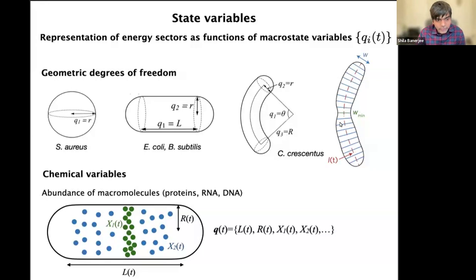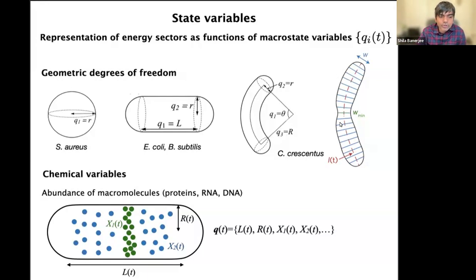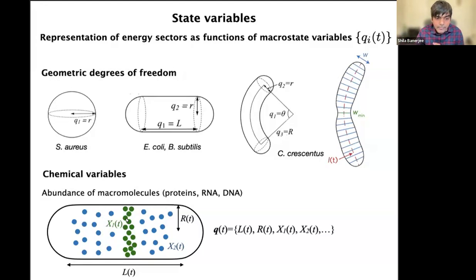In addition to geometric degrees of freedom, the cell is a bag of different macromolecules, so you can also introduce chemical variables — the abundance of macromolecules. For example, I'm modeling two macromolecules: the blue ones are ribosomes and the green ones are FtsZ, which form a division ring around the cell, with abundances x1 and x2. You can formulate your equations in terms of those variables and keep adding more if desired.